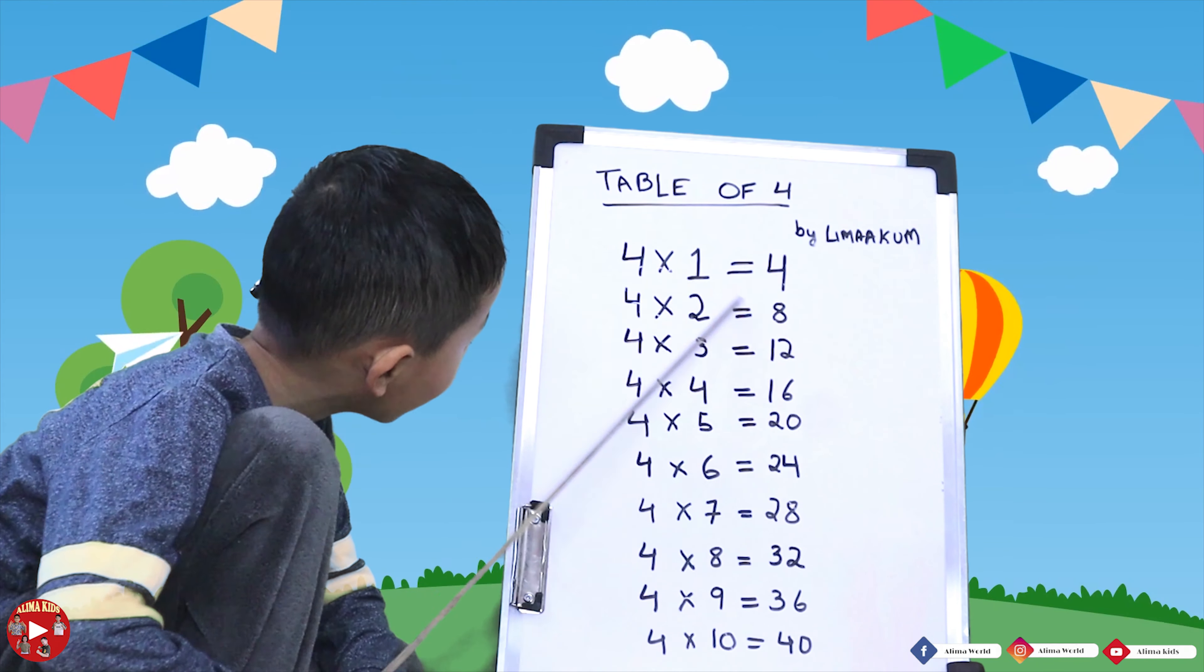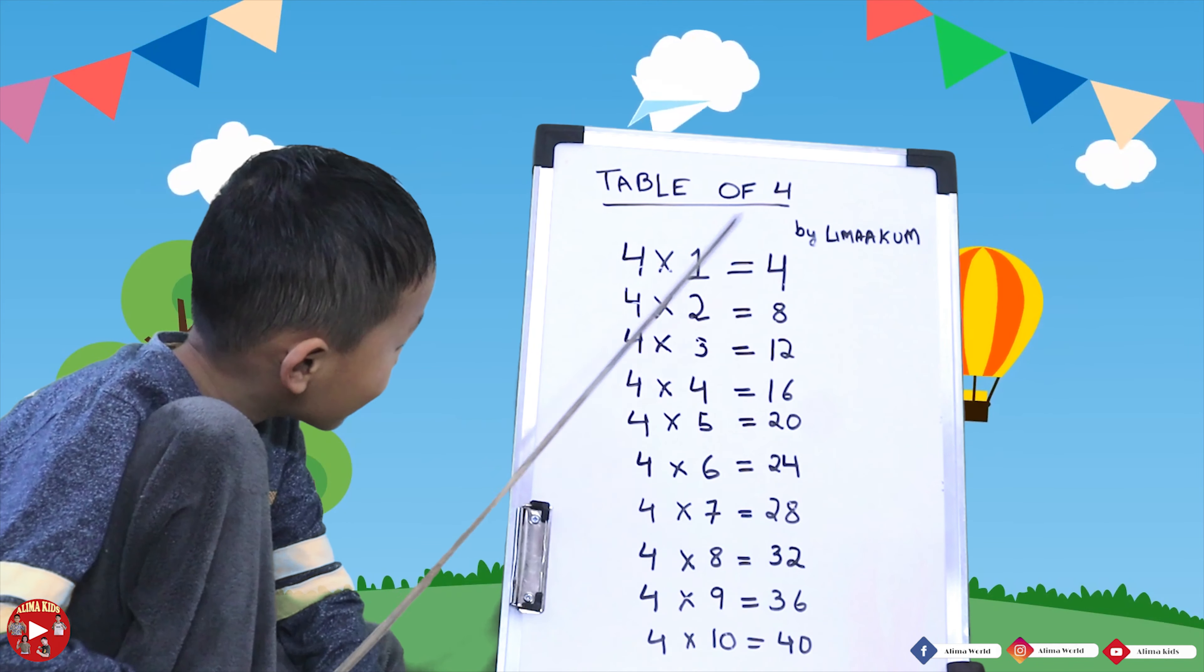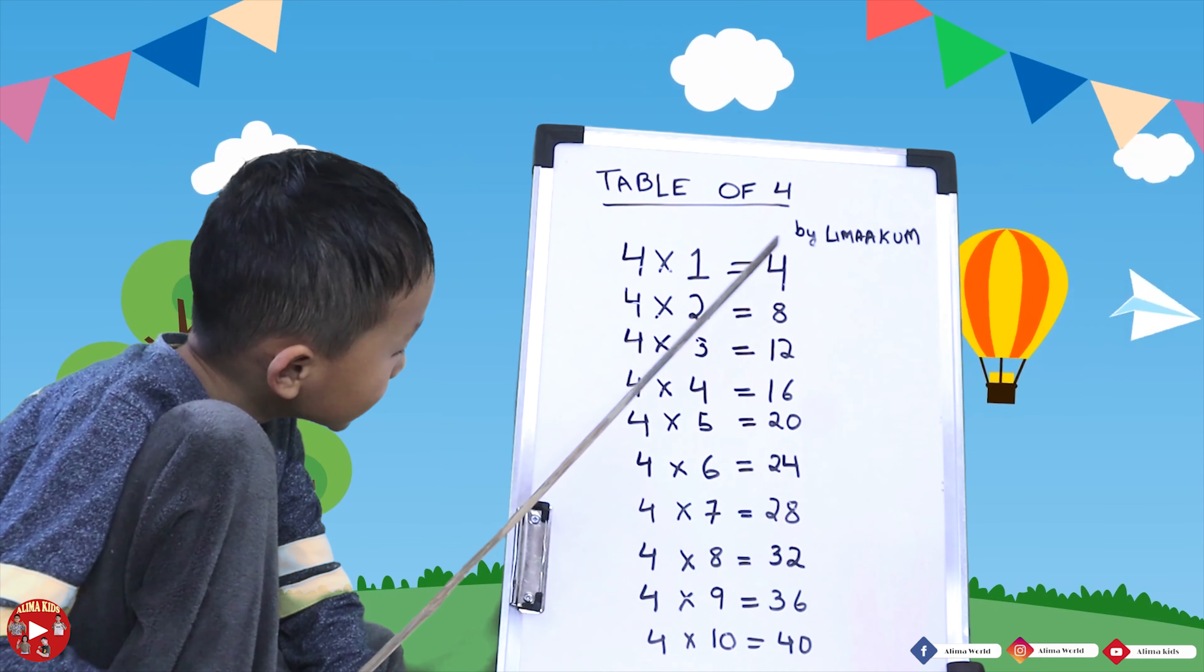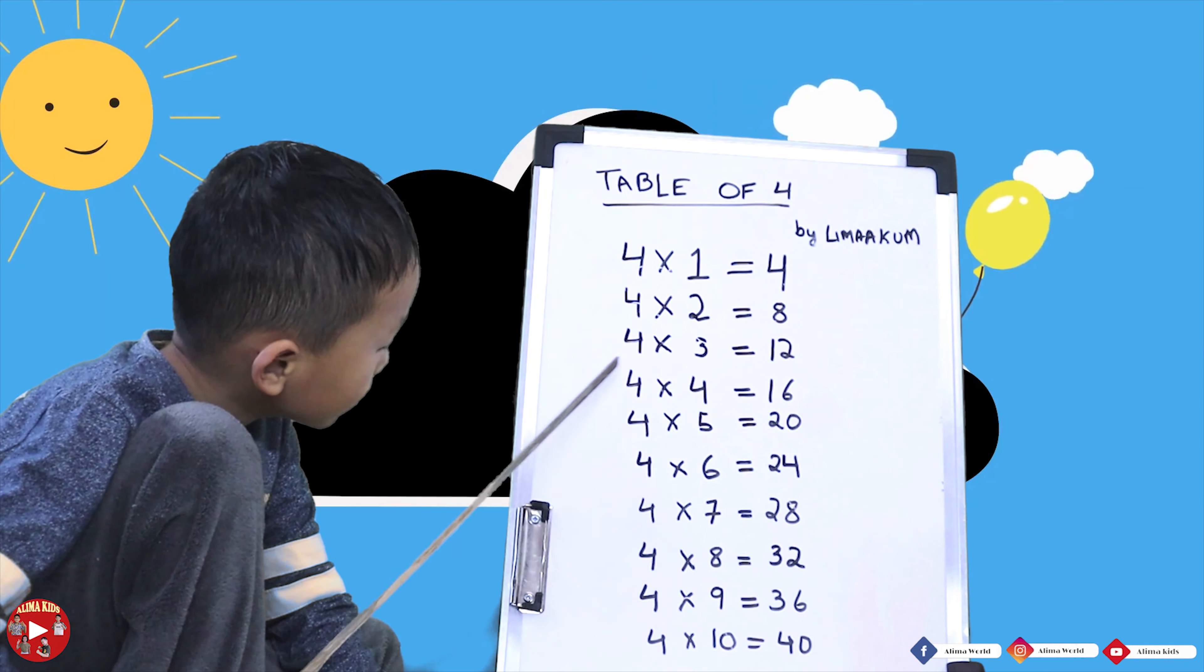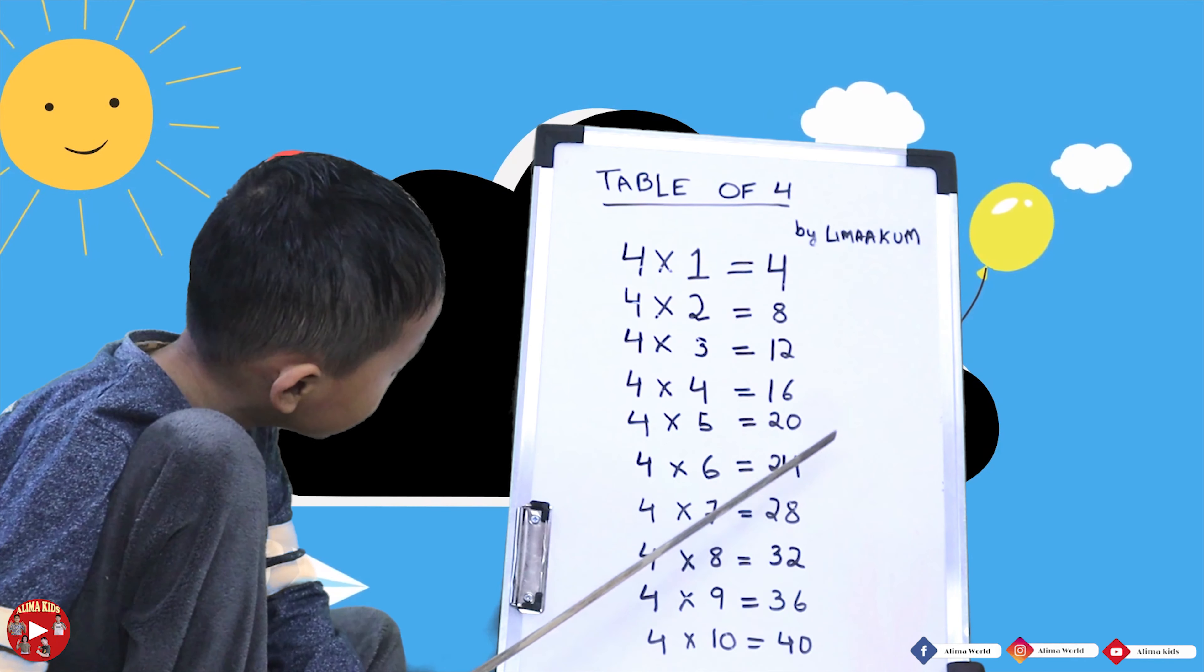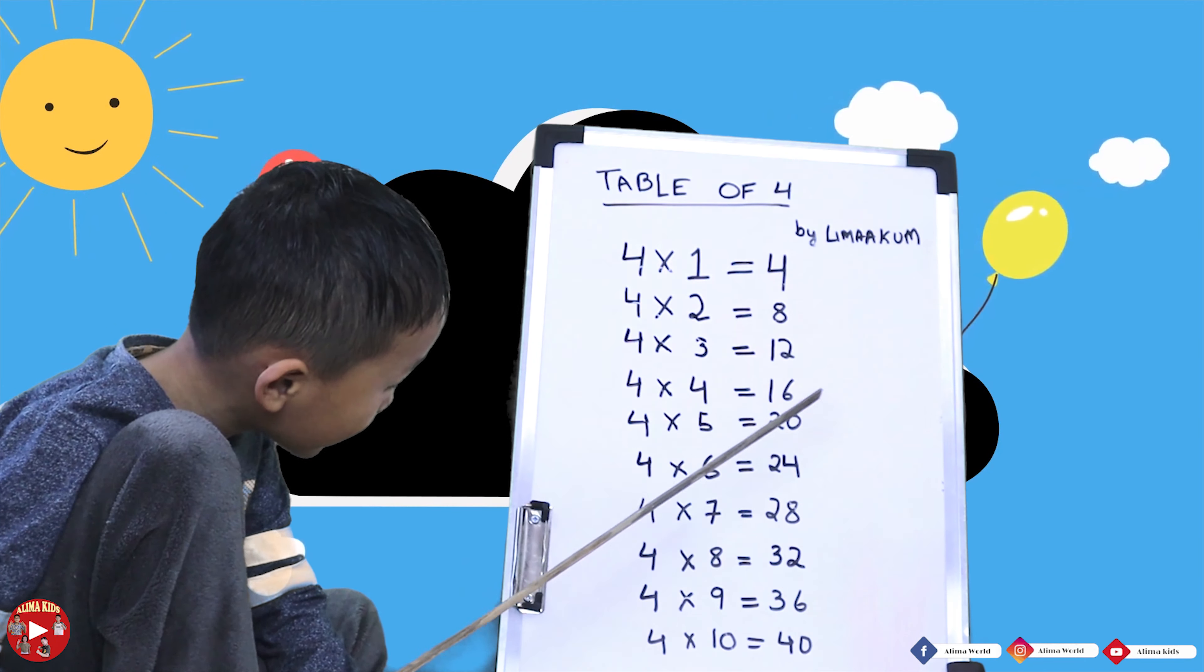Four ones are four. Four twos are eight. Four threes are twelve. No, twelve. Four fours are six. Four fives are twenty.